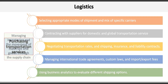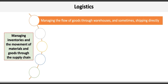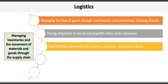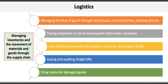The second key responsibility of a logistics manager is managing inventories and the movement of materials and goods through the supply chain. This can include managing the flow of goods through warehouses and sometimes shipping directly to retail stores and customers, tracing shipments in transit and expediting them when necessary, coordinating shipments with airports, rail yards, and seaport docks, and issuing and auditing freight bills and filing claims for damaged goods.